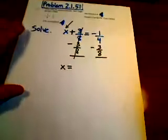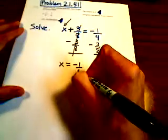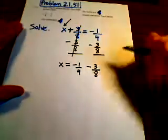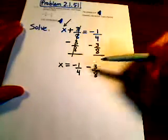We're left with x equaling negative 1/4 minus 3/8. If I write it instead of up and down, I'm going to write it sideways like that.